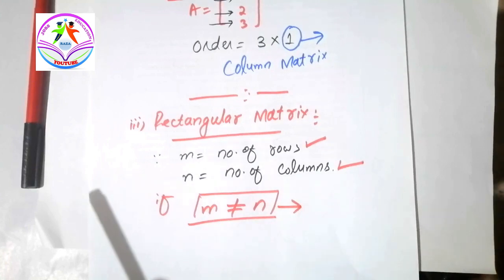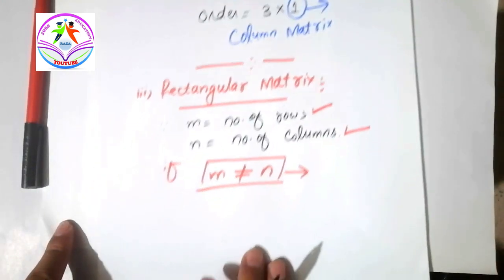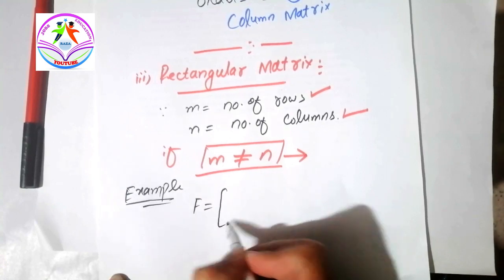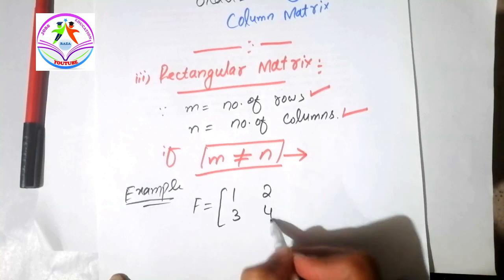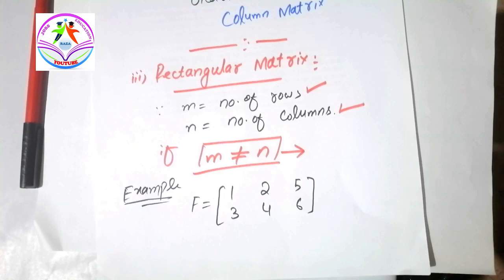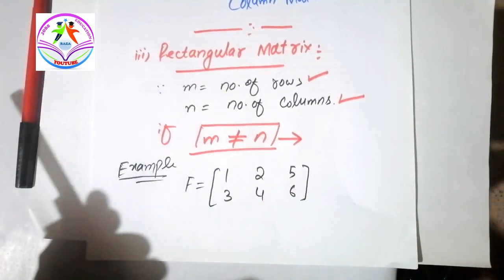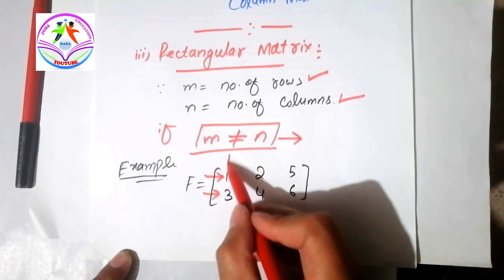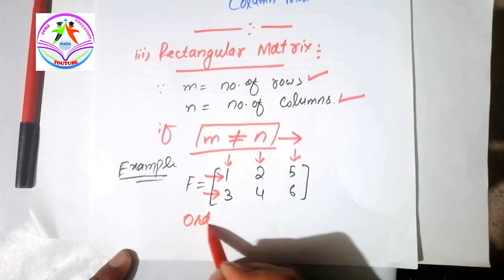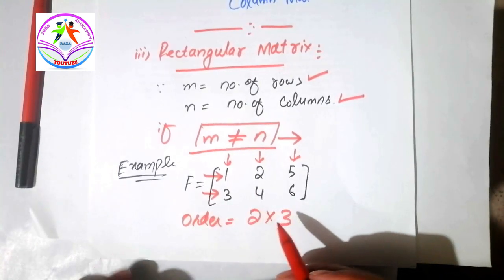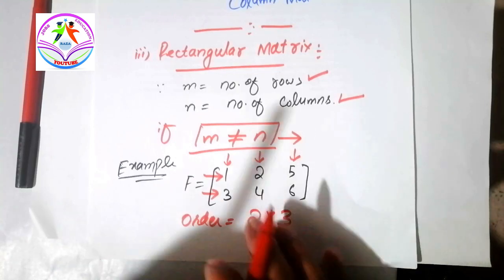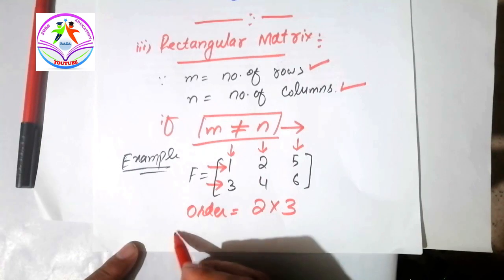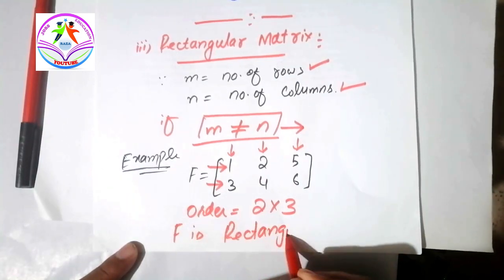Let me give you an example. F is equal to a matrix with elements 1, 2, 3, 4, 5, 6. First we find the order: first row, second row, first column, second column, third column — the order is 2×3. Here we have two rows and three columns. According to the rectangular matrix condition, the number of rows is not equal to the number of columns, so F is a rectangular matrix.